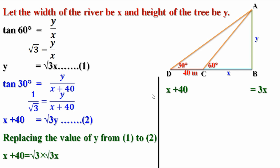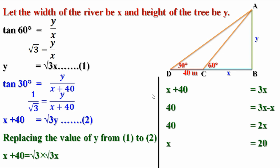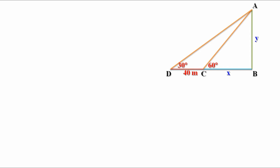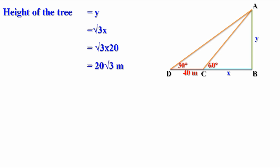Now substitute the value of y equal to root 3 x in equation 2. So we will get x plus 40 equal to root 3 into root 3 x. Root 3 into root 3 is 3. So we can write it as x plus 40 equal to 3x. Taking x on the other side, we get 40 equal to 3x minus x, or 40 equal to 2x. Therefore x equal to 40 by 2 or 20. Width of the river equal to 20 meters. The height of the tree is AB, taken as y, and y equal to root 3 x, so height of the tree equal to 20 root 3 meters.